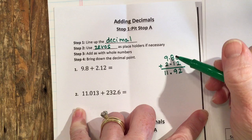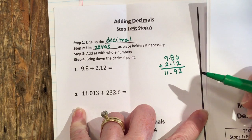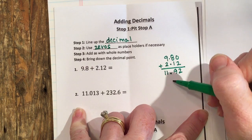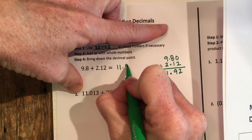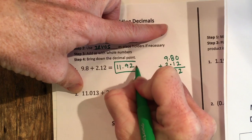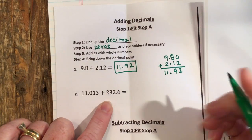My last step is to bring the decimal point down. It really helps to write neatly and make sure your numbers go underneath the number they're supposed to, and that way when you drop down your decimal you're getting it in the right place. So this is 11.92.